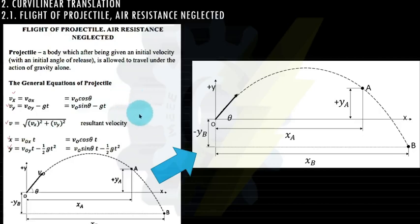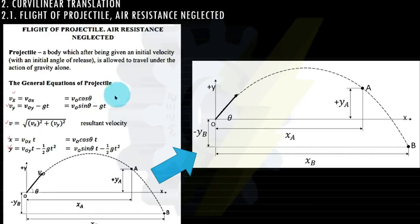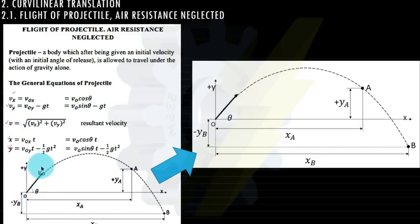We have four special cases and three other equations — we'll discuss those later. First, let us discuss these five equations. Basically, we have the initial velocity v sub o. With an initial velocity v sub o, the path is a second degree or parabolic curve.